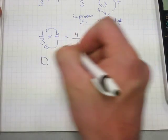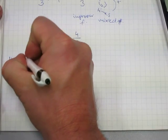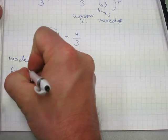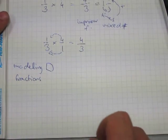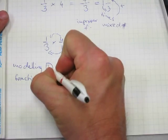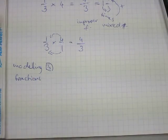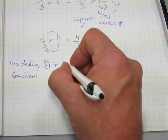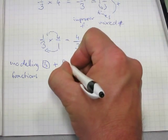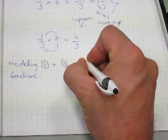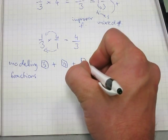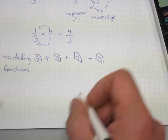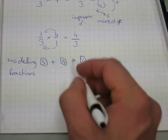One more thing — this is called modeling fractions. If you need to refresh on this, look it up under that title. Here is one-third times four. That means we have four of them: there's one-third, there's one-third, there is one more third of a circle, and there is one more third of a circle.